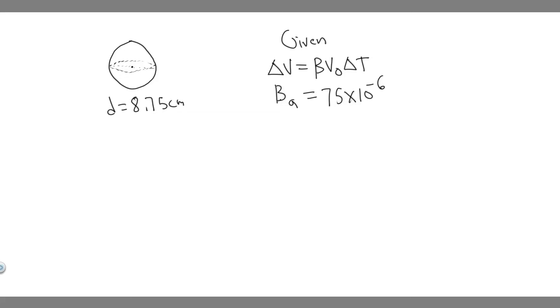In this problem, we're told an aluminum sphere is 8.75 centimeters in diameter. What will be its change in volume if it is heated from 30 degrees Celsius to 180 degrees Celsius?